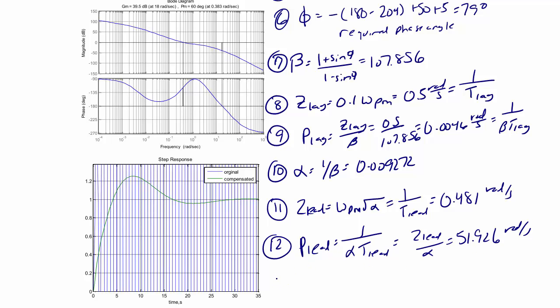And finally, we can write gc of s. The lag compensator is s plus 0.5 over s plus 0.0046, the lead compensator is s plus 0.481 divided by s plus 51.926.